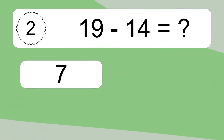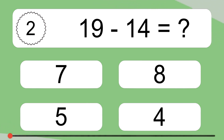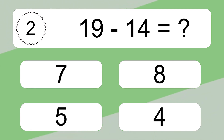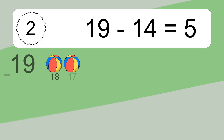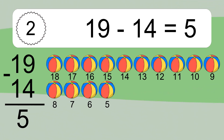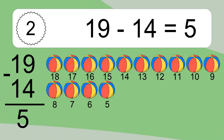19 minus 14 equals what? 19 minus 14 equals 5. Let's count it: 18, 17, 16, 15, 14, 13, 12, 11, 10, 9, 8, 7, 6, 5.